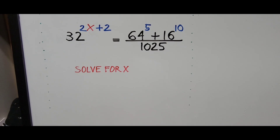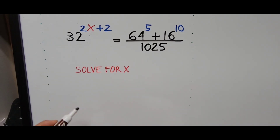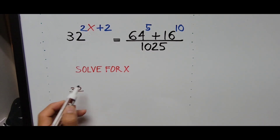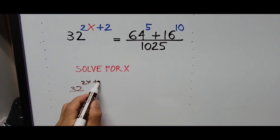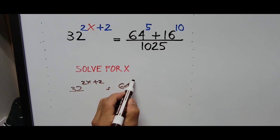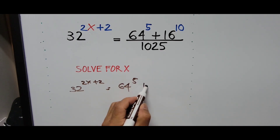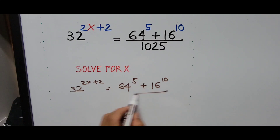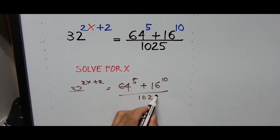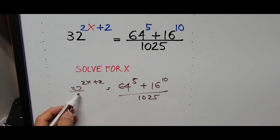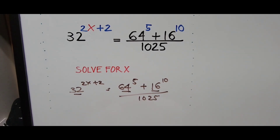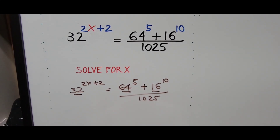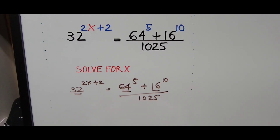So we rewrite the equation again: 32 raised to the 2x plus 2 equals 64 raised to the fifth power plus 16 raised to the 10th power, divided by 1025. Our aim is to get a common base — that's how we solve exponential equations, and that would be the first move to make it easier.